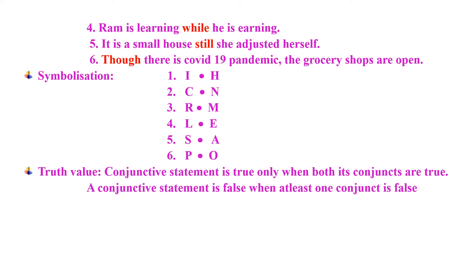Fifth: 'It is a small house, still she adjusted herself' — 'it is a small house' is the first conjunct, 'she adjusted herself' is the second, joined by the conjunction 'still.' Sixth: 'Though there is a COVID-19 pandemic, the grocery shops are open' — 'though' is the conjunction, 'there is a COVID-19 pandemic' is the first conjunct, and 'grocery shops are open' is the second conjunct. The symbolizations are: I dot H, C dot N, R dot M, L dot E, S dot A, and P dot Q. All these alphabets used are propositional constants, used instead of specific propositions.